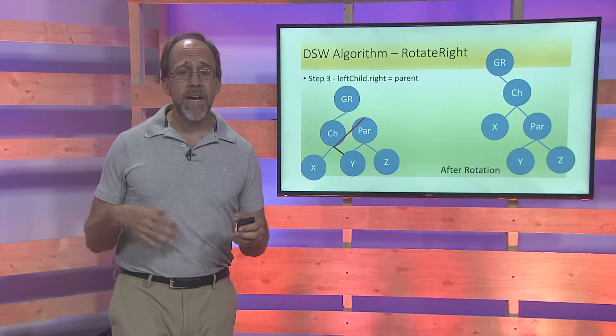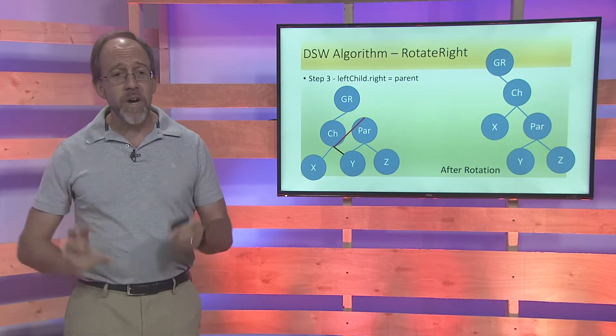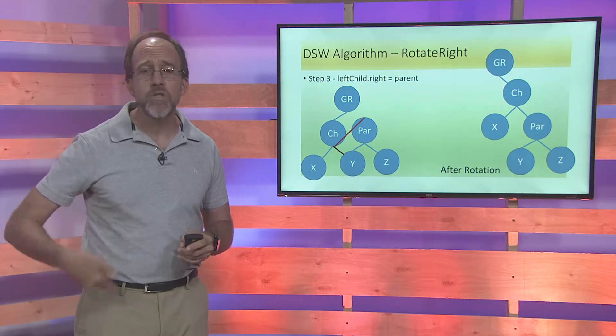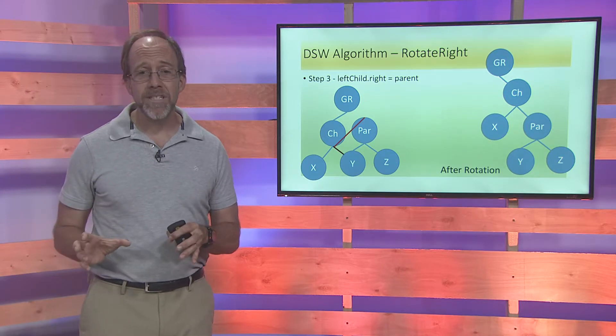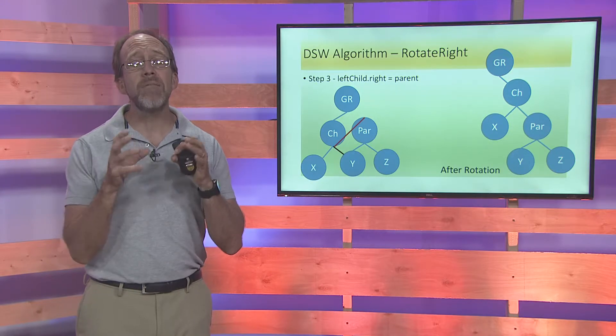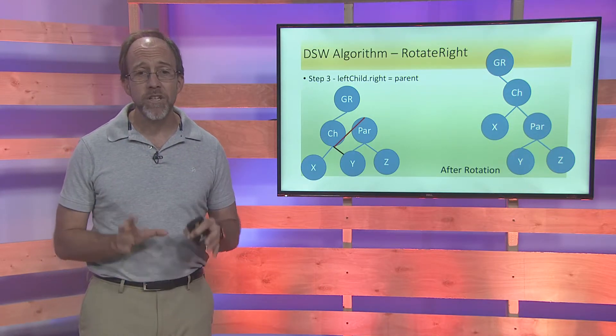The beauty of this is it doesn't change the fundamental principles — it just shifts things to the right. If you keep doing this over and over again, if a node has no left child you simply skip that step. Eventually you'll have a tree that is a single line using only right pointers — a backbone. That's step one of the DSW algorithm. You can look up DSW algorithm online and find animations to visualize this process.